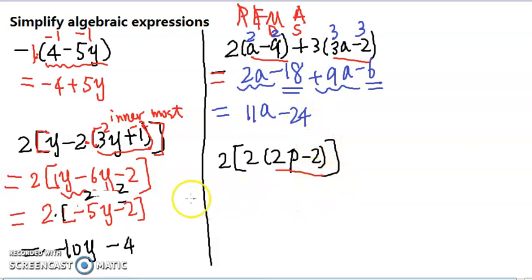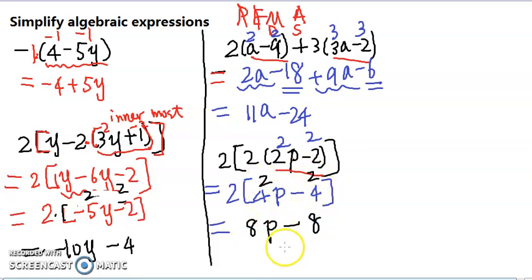All right, now the next one will be, we have two pairs, so one pair inside of another. Let's start from the inside pair. We distribute this 2 to both of them. So we get 2 times 2p, 4p, 2 times negative 2 minus 4. And we decide, we distribute the 2 to both of them to get 2 times 4p is 8p, minus 2 times negative 4 is 8. So that's the answer for this one.